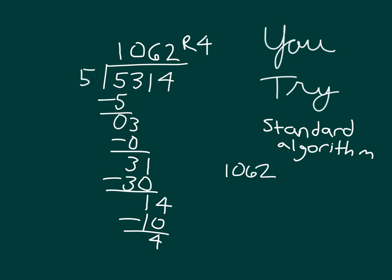Here's our check. We'll take 1,062 and multiply by five. 5 times 2 is 10, zero, regroup the one. 5 times 6 is 30, plus 1 is 31, one, regroup the three. 5 times 0 is 0, plus 3 is 3, and 5 times 1 is 5. So we have 5,310. Well, it doesn't match the 5,314, because we have not added in the remainder yet.